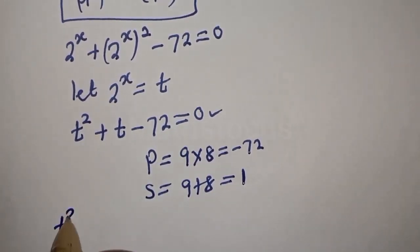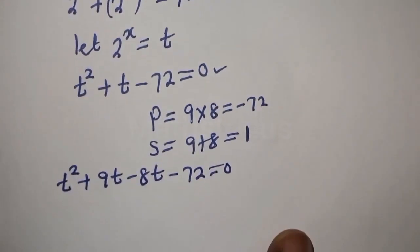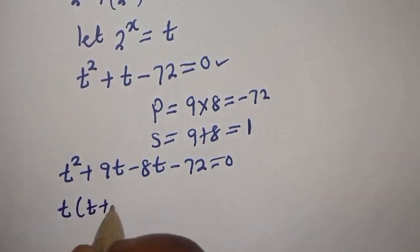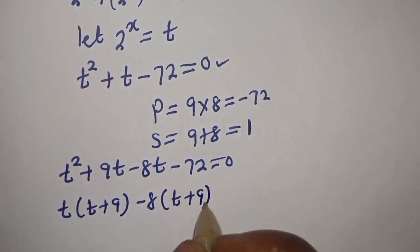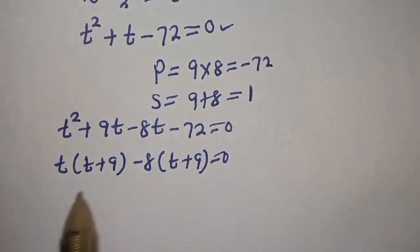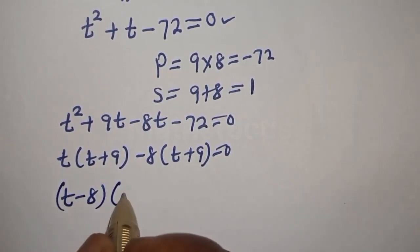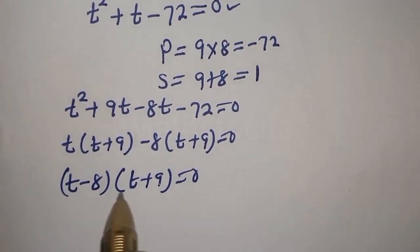Now let's substitute. We have t squared plus 9t minus 8t minus 72 is equal to 0. T is common here: t bracket t plus 9 is equal to 0. Then t plus 9 is common, giving us t minus 8, bracket t plus 9, equal to 0.